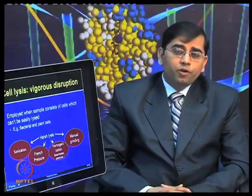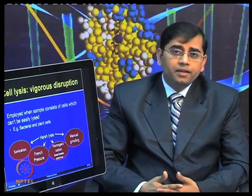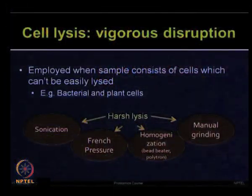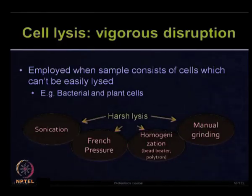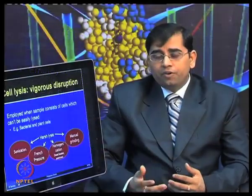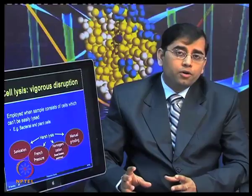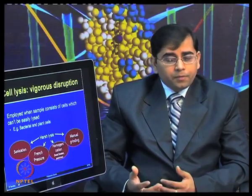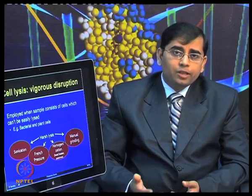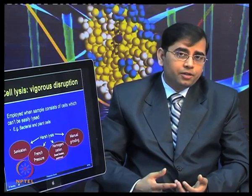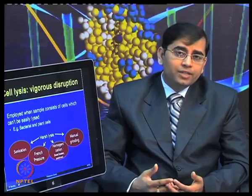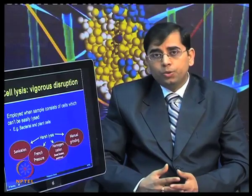If cells are very difficult to lyse, you need to involve vigorous disruption methods such as sonication, French pressure, homogenization, or manual grinding. We will talk about different types of cell lysis methods and their principles in more detail with specific sample types. In most sample preparations, people use manual grinding or homogenization using a bead beater or polytron homogenizers.